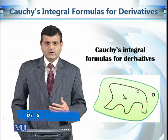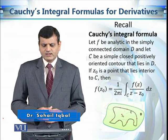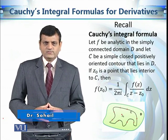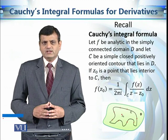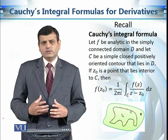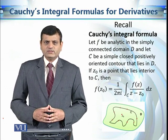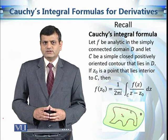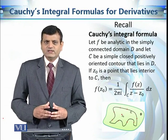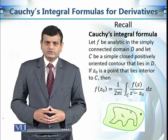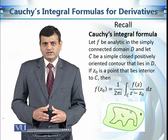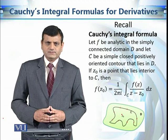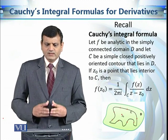We are going to see Cauchy's integral formula for the derivatives of a complex valued function. Let's recall Cauchy's integral formula: we have an analytic function in a simply connected domain D and a simple closed positively oriented contour C. Then the functional value at any point z₀ inside the contour C, f(z₀), can be evaluated as 1/(2πi) times the contour integral of f(z)/(z − z₀) along contour C.